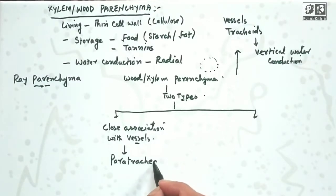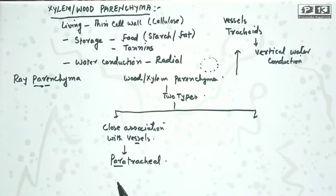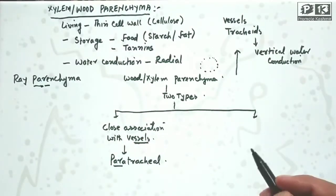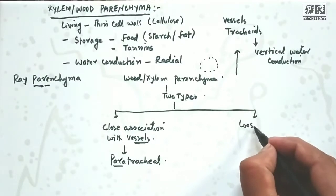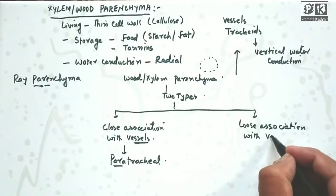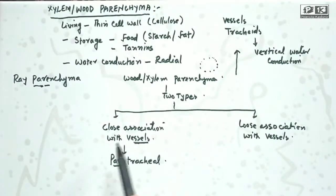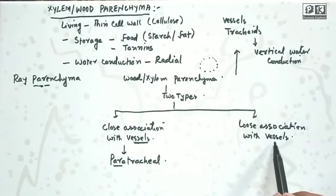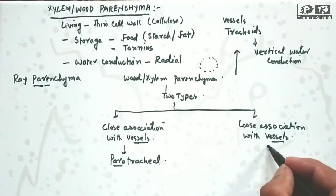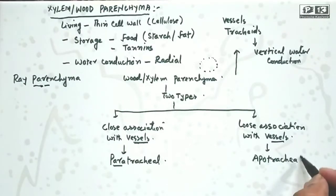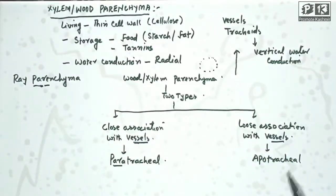Paratracheal means neighboring. If xylem parenchyma has close association with vessels, it is called paratracheal. If it has loose association with vessels - meaning it is far from vessels and not in close association - then it is called apotracheal wood parenchyma.